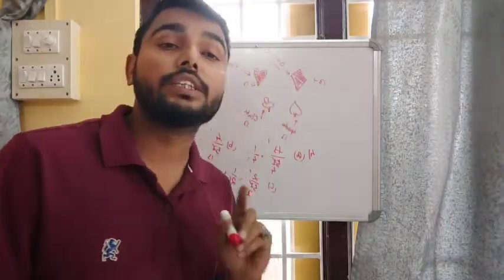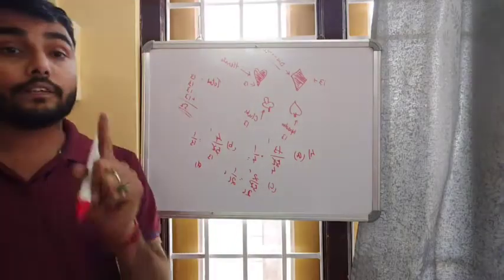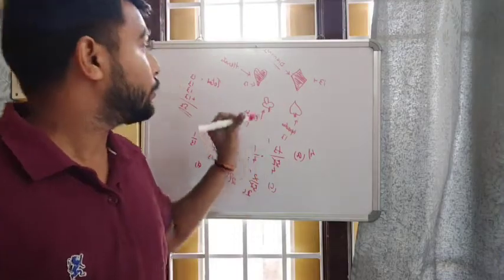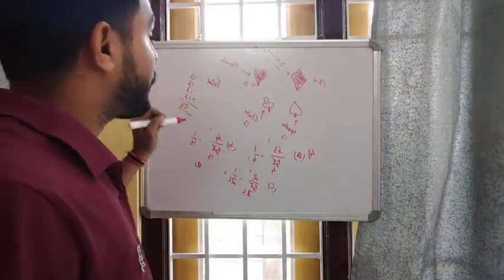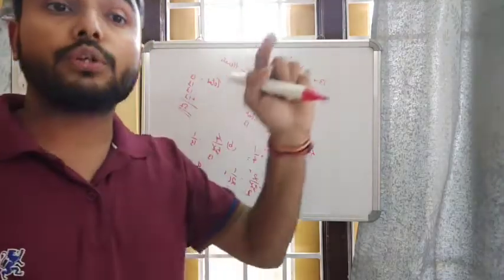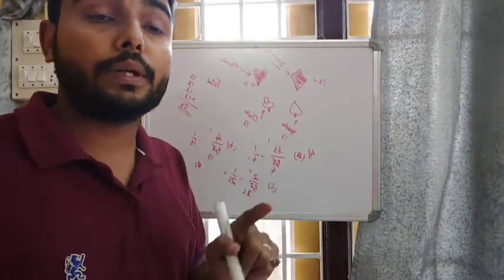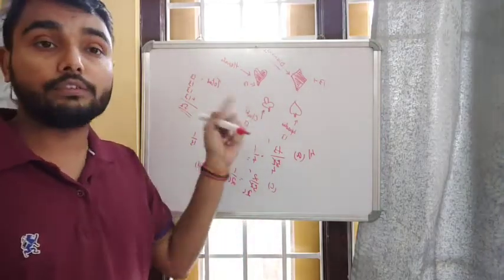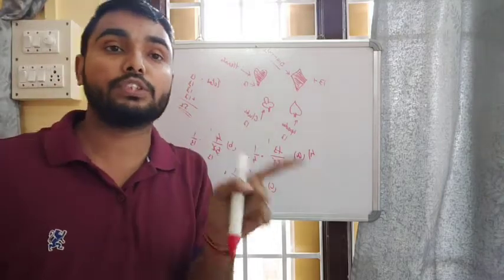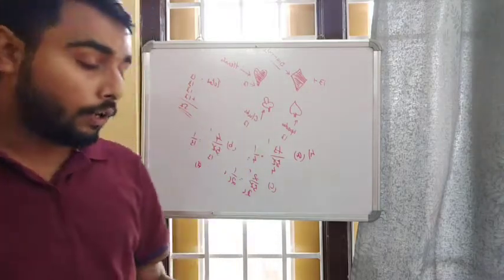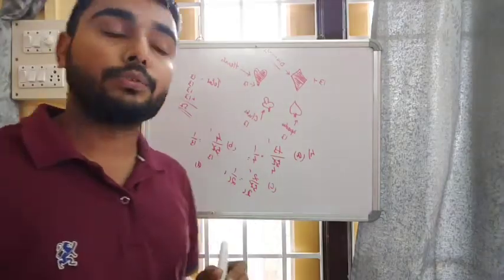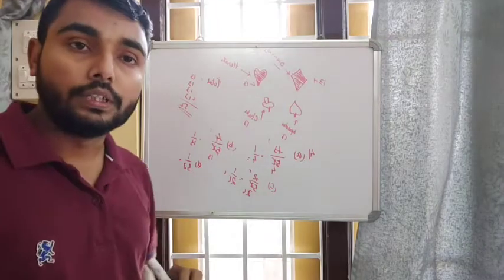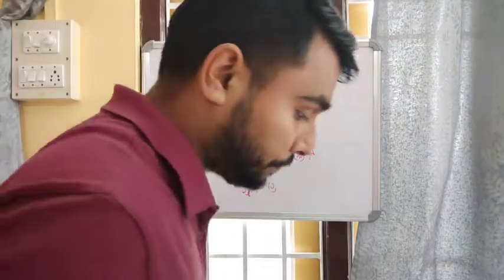For number D, a seven of hearts is chosen. You need a card that is specifically the seven from the hearts suit. Out of 52 cards, only one card satisfies this — the seven of hearts. So the probability is one by 52.